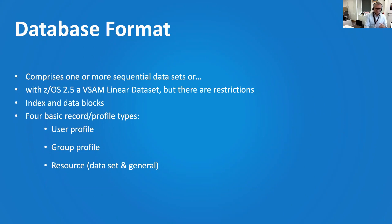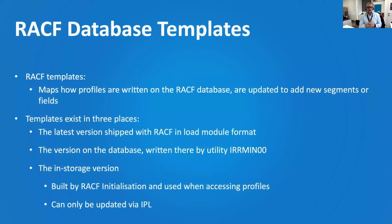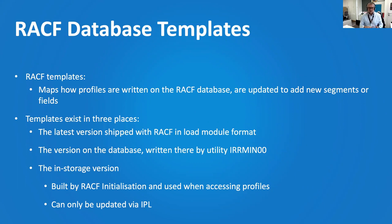We map these using what are known as RACF database templates. They exist in multiple places — they used to be shipped by IBM as a sequential data set text file you could browse, but they're now in load module format. We have three locations: the load module, the version written to the database, and an in-storage version. Think of it as the data layout for your RACF database.